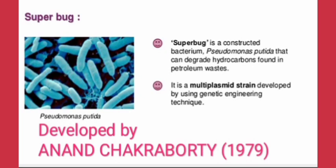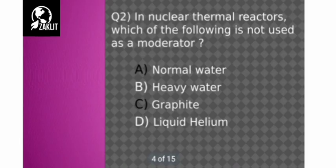Pseudomonas putida is the super bug, which is a multi-plasmid strain developed using genetic engineering techniques. This super bug was developed by Anand Chakrabarti in the year 1979, and it is found to degrade hydrocarbons which are found in petroleum wastes.